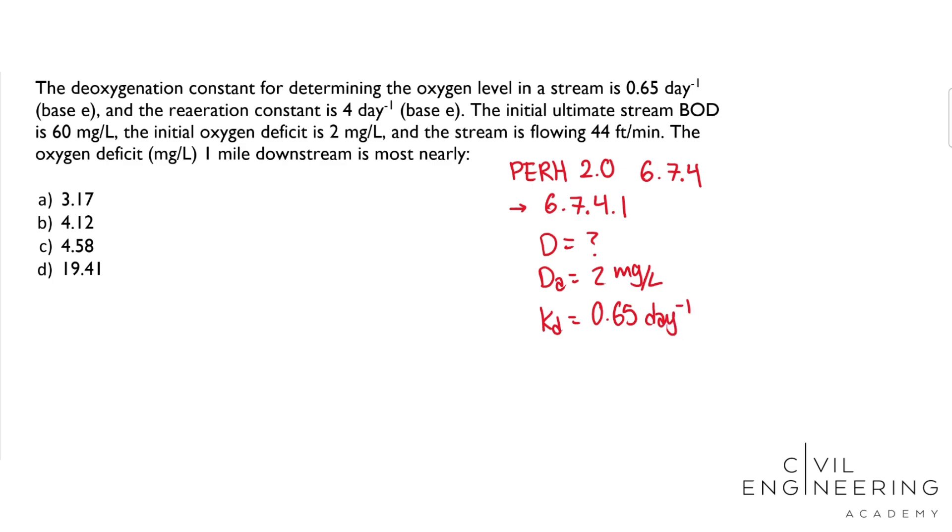KR is the reaeration rate constant, and we also were given that, that's 4, so KR equals 4 days to the negative 1. LA is the initial ultimate BOD in the mixing zone, and we were given that at 60 mg per liter. LA equals 60 mg per liter. What else do we need?